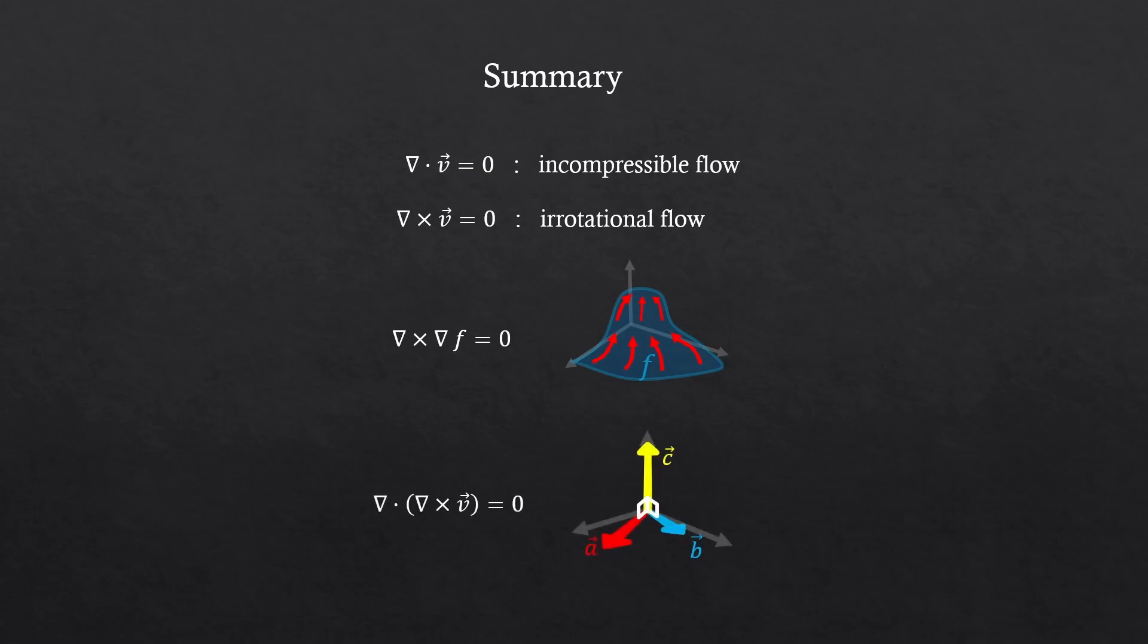All right, let's summarize what we have discussed so far. If the divergence of some vector is zero, that means it's an incompressible flow. If the curl of some vector is zero, that means the vector field is not rotating, it's an irrotational flow. And this vector identity told us that the gradient of all the scalar fields in this world are irrotational. And this is just how the cross product gives us a new vector that is perpendicular to the original vectors.